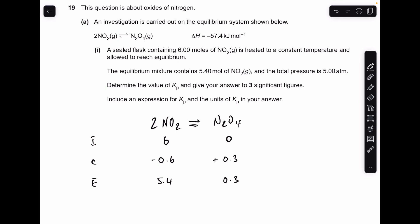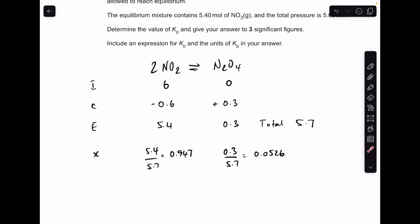Next thing we do is work out the total moles at equilibrium. So that's obviously going to be 5.7 moles. And then we need to work out our mole fractions. So that's the moles of each gas at equilibrium divided by the total moles. So there's my two mole fractions there.